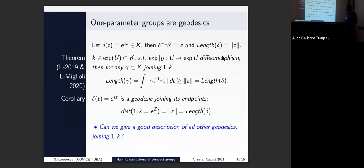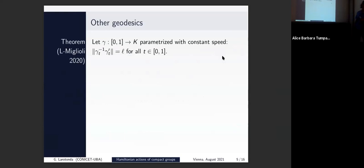The problem we wanted to solve was to give a good characterization of all other short paths joining the identity of the group to a given point in the set — the capital set. I will go through the main theory because it is relevant for our job, even if it's not the main interest of the talk.